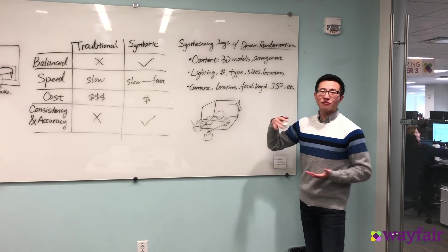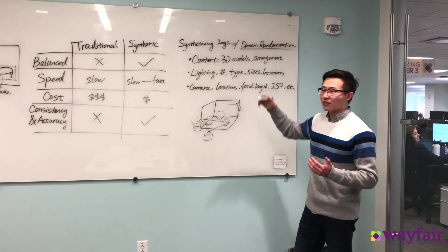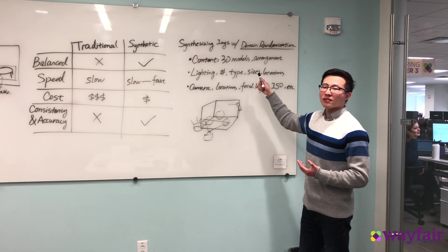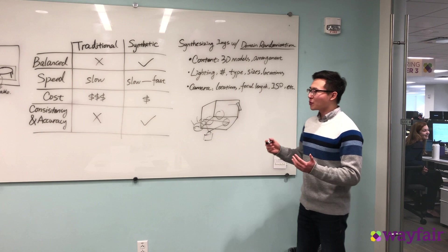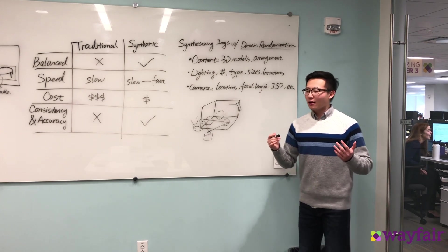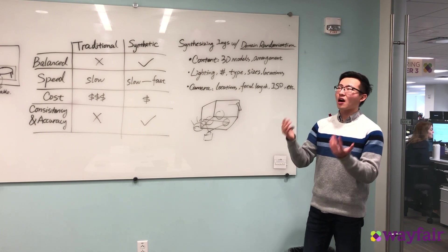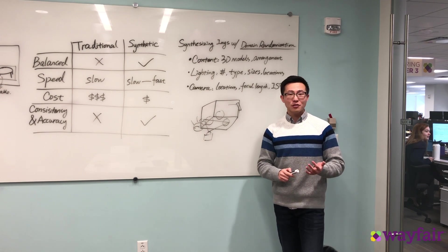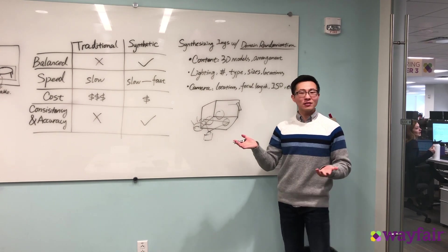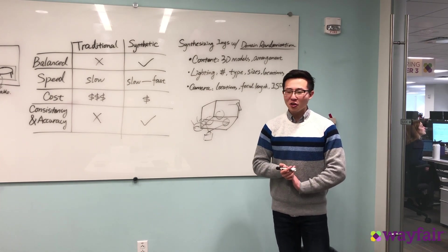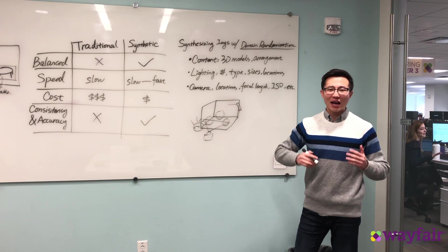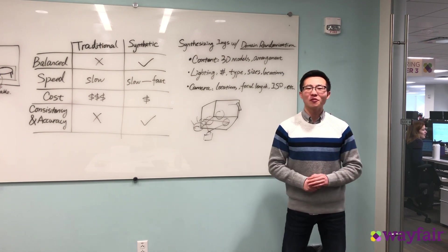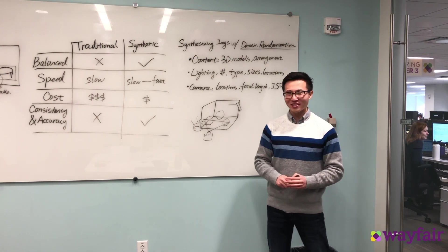Given this framework of rendering pipeline, what you want to do is keep iterating through this entire parameterized framework and randomize those parameters. Over time you'll end up with a whole lot of diverse images that hopefully capture the complexity of the real world. This can all be achieved by 3D software like Blender or 3ds Max, or game engines like Unity or Unreal. This has been a brief overview of how we synthesize training images and why we do this at Wayfair. Thank you so much for listening, and please stay tuned for this channel because we have cool projects in the future.